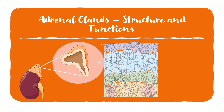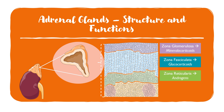The topmost layer is known as the zona glomerulosa, which secretes mineralocorticoids like aldosterone. The second layer is the zona fasciculata, which secretes glucocorticoids like cortisol. The third layer is the zona reticularis, which secretes androgens. These three layers together form the adrenal cortex, and finally we have the adrenal medulla which secretes catecholamines like adrenaline.